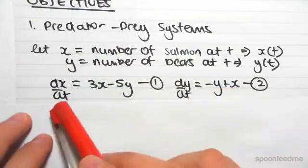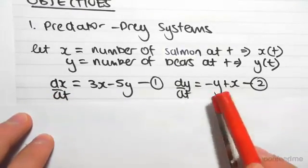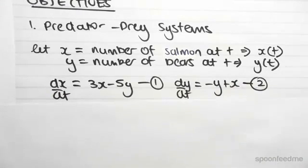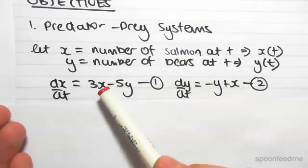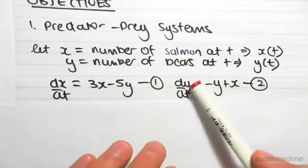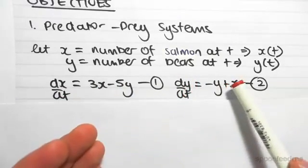So we essentially have a differential here in terms of x and y, and a differential here in terms of y and x. Now what these systems of differentials are saying is that we have how the salmon's changing with time in terms of both the salmon and the bears, and we have how the bears are changing with time in respect to the salmon and the bears.